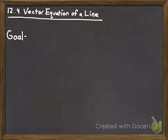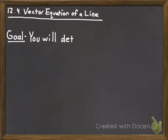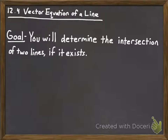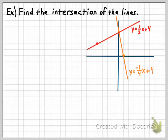Welcome everybody. We're going to continue in section 12.4 today, in which we're talking about the vector equation of a line. In particular, what we're going to be doing in this video is teaching you how to determine the intersection of two lines if the intersection actually does exist — in other words, if the lines do intersect one another. Given vector equations of lines, we're going to determine whether two lines intersect one another and where they intersect. I want to start this process without vector equations and then show you how to do the exact same thing with vector equations.